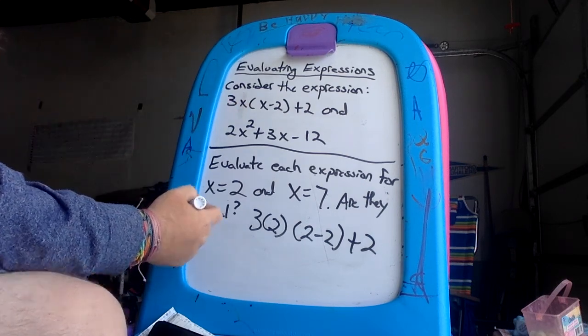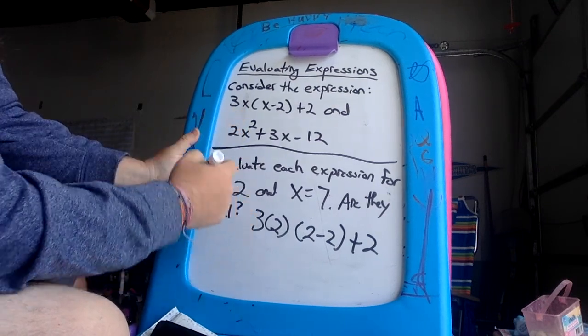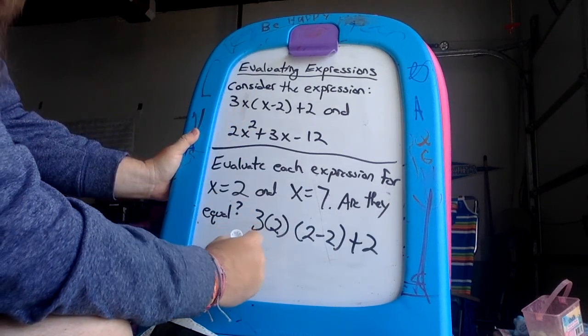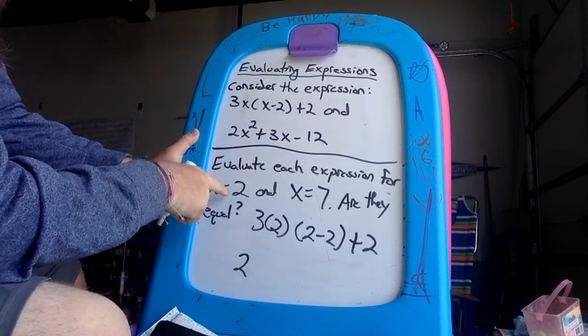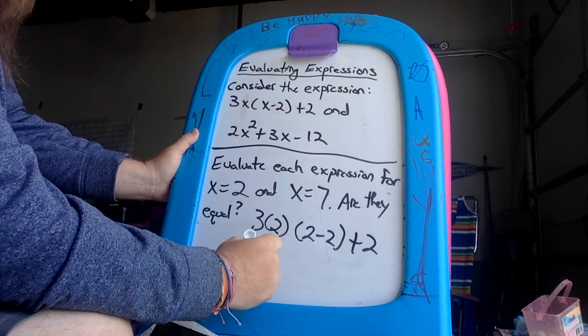And then just as we follow along, and again don't forget a number next to parentheses always means what operation? Multiplication. And then just to show you guys how to start this one, this would be 2, x stands for what again is the unknown which is 2, so 2.